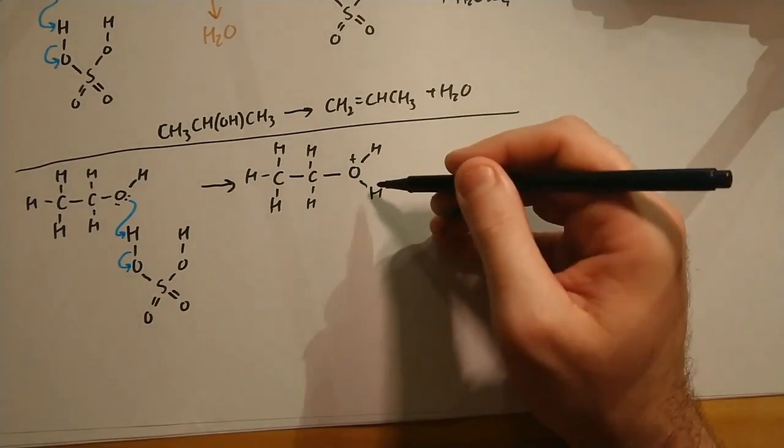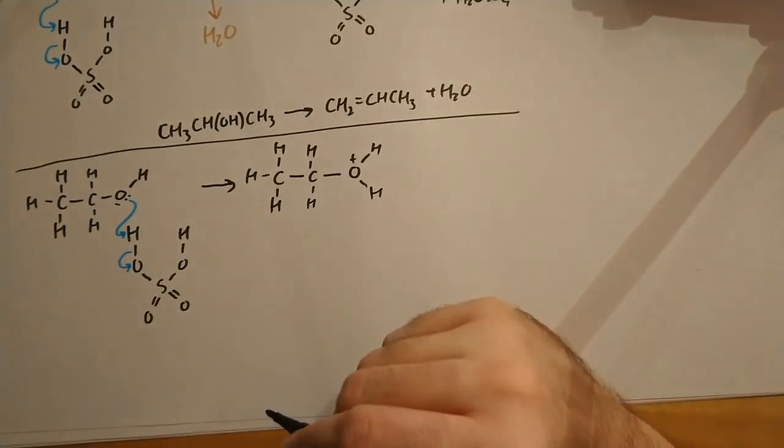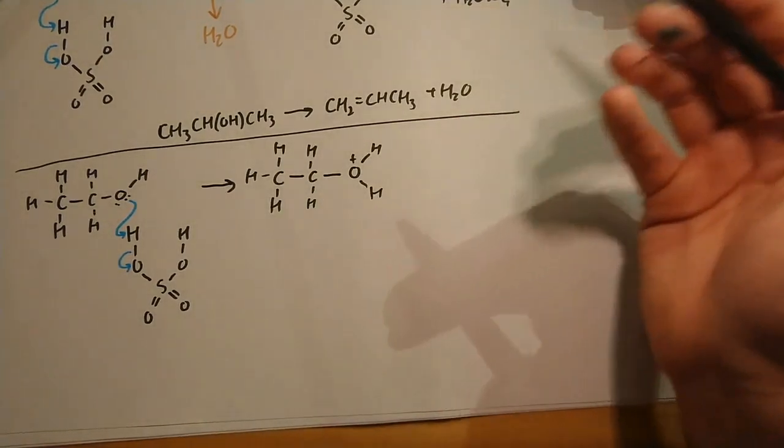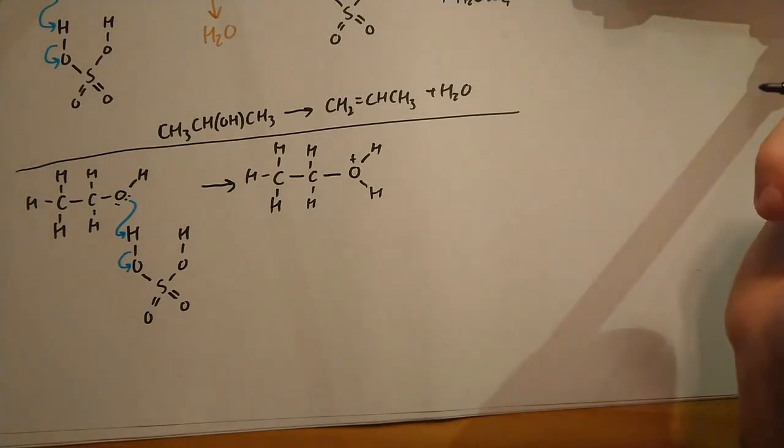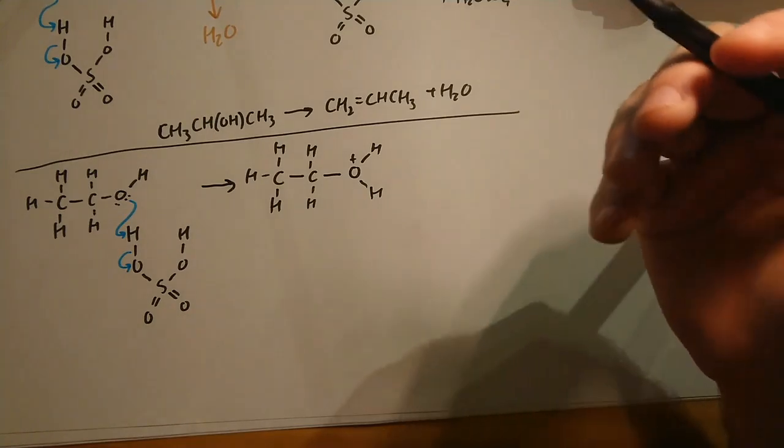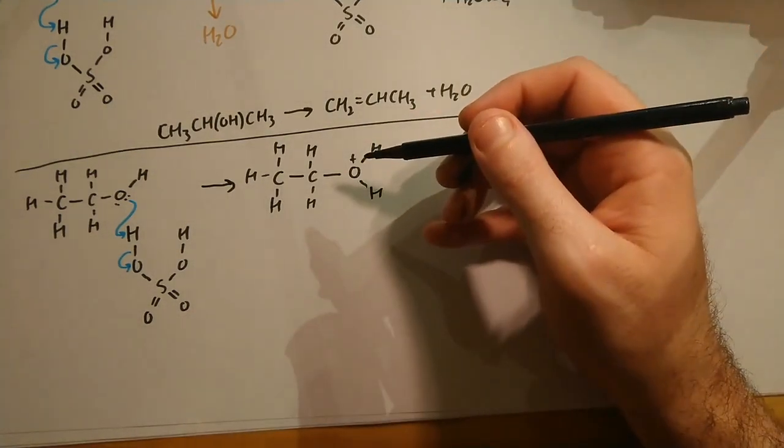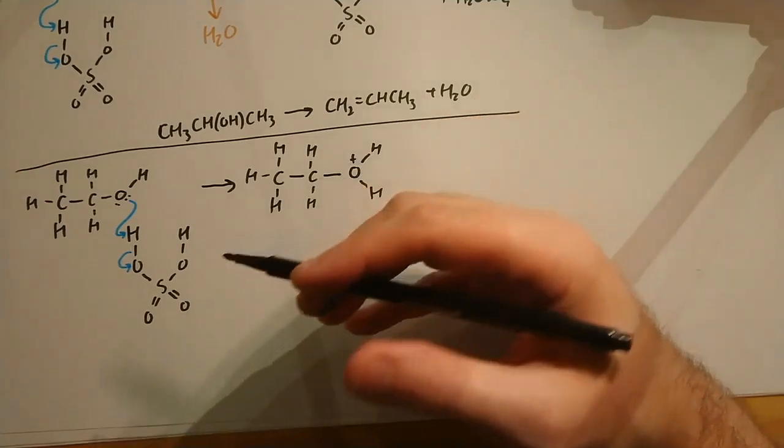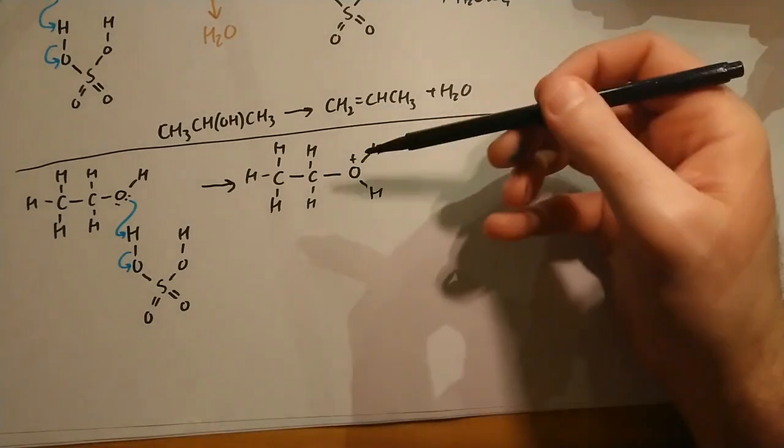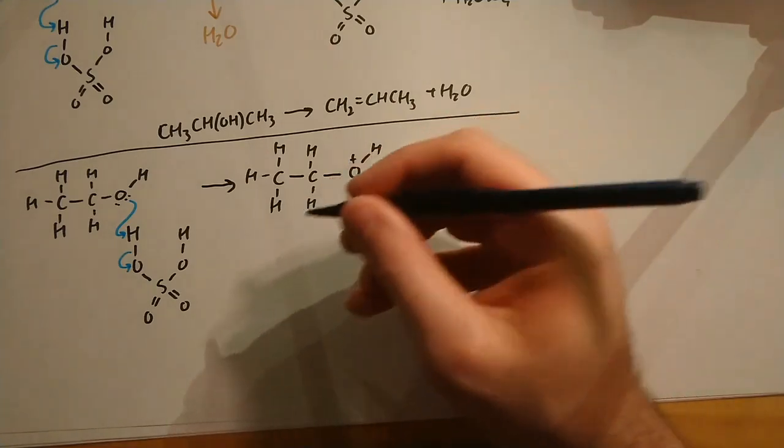If that water molecule disappeared off like it did up in the top reaction, we'd be left with a positive charge on this carbon. It'd be a primary carbocation. Now primary carbocations are so unstable and require so much energy to keep it and make it there that it doesn't happen like that in real life. You don't create a primary carbocation in an alcohol dehydration reaction. But that's not actually a problem.